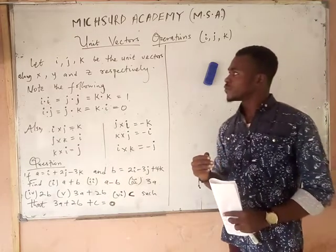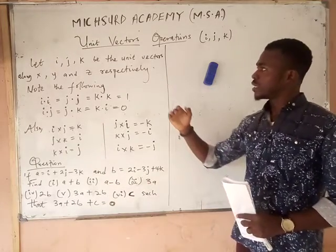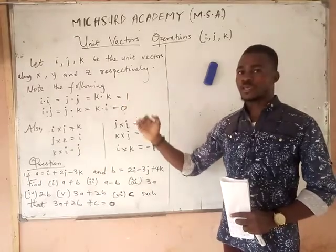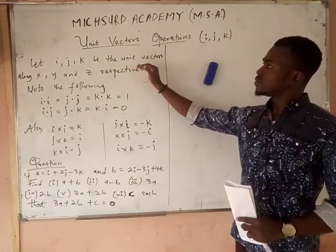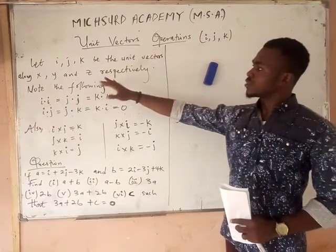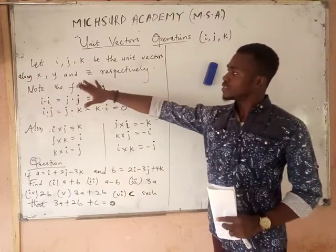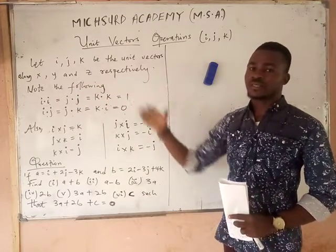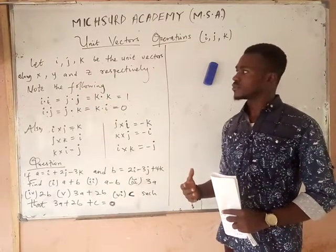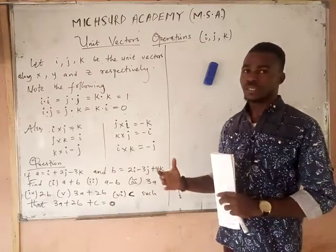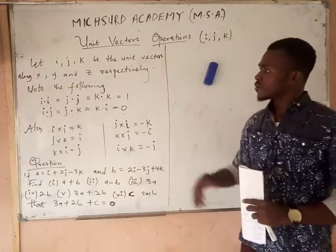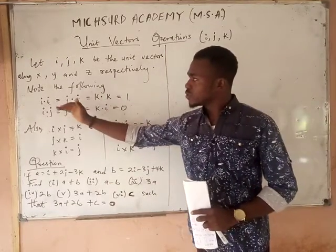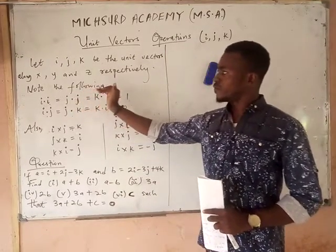Now, the unit vectors — we say let these unit vectors i, j, and k be the unit vectors that will represent x, y, and z directions, or coordinates. Now, we are going to take note of the following.